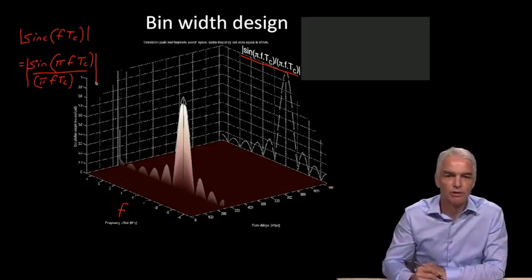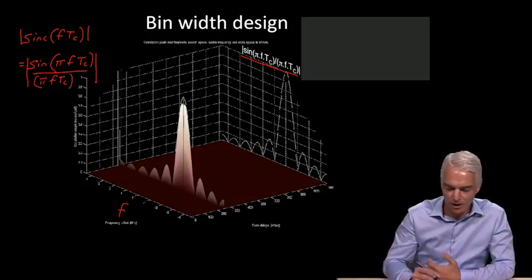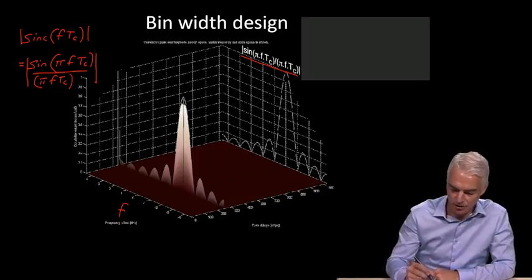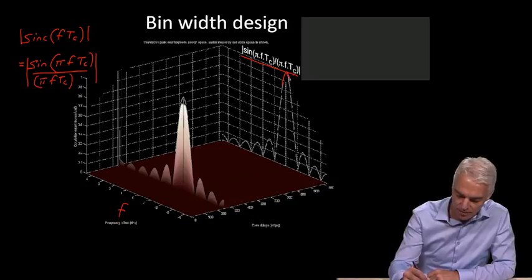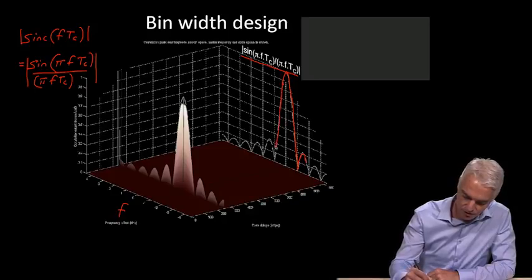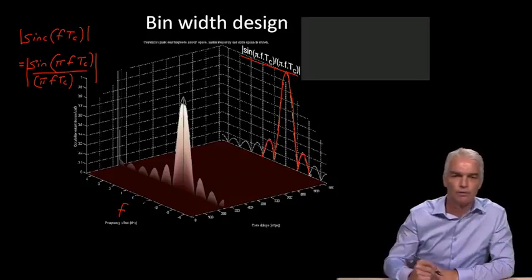When we look at our correlation peak, we always take magnitudes, and so everything here is a magnitude. That describes this function. It goes down to zero and because the magnitude comes up again. This is the response to a frequency error.